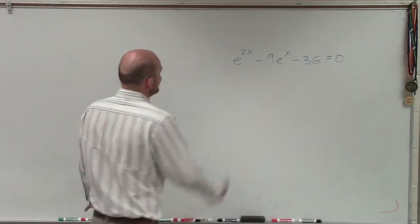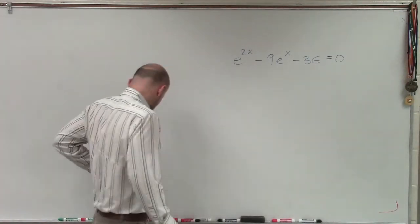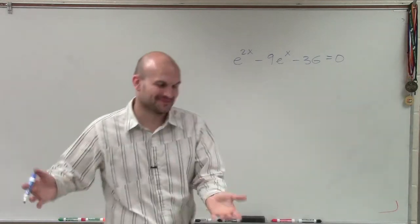All right, so we've got to end on a good one, right? So I have e raised to the 2x minus 9e to the x minus 36 equals 0.